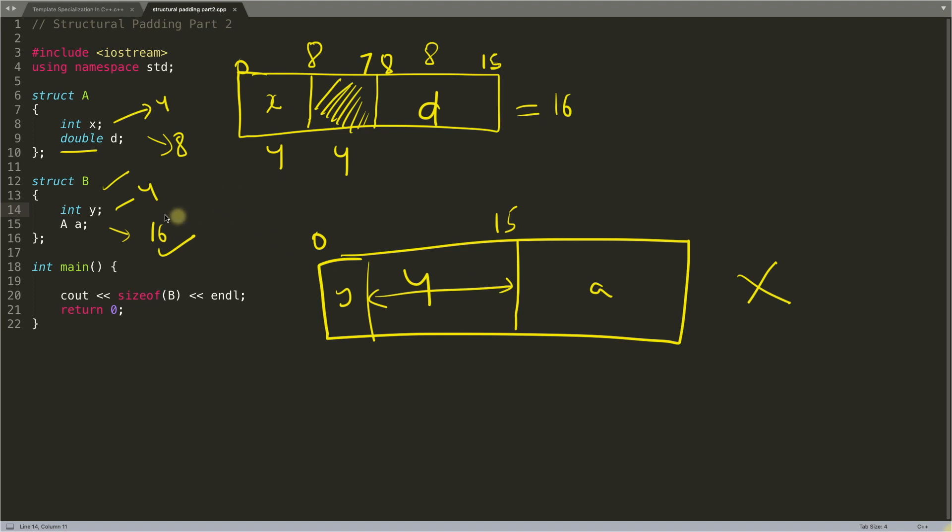Let's discuss the actual thing. Structure B will try to open structure A itself. What do I mean by opening it? It will check which is the biggest data member inside A, which happens to be double, which is 8 bytes. So again, it will create 8-byte blocks, not 16-byte blocks. I hope you're following me. So let's suppose this is 0 to 7 (8 bytes), and it will try to place y.